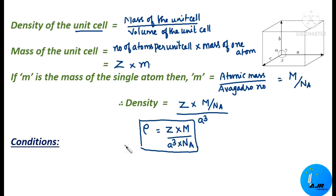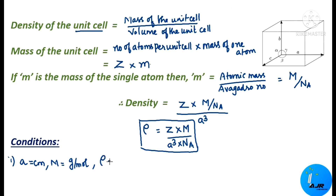There are certain conditions which have to be followed strictly while doing the calculation to find out the density of a crystal. The first condition is: if the edge length A is given in centimeters and the capital M value is given in gram per mole, then the density, rho, will be given in gram per centimeter cube.